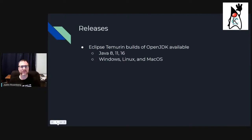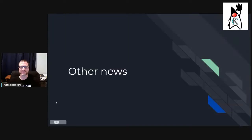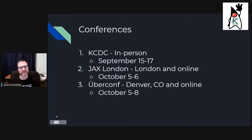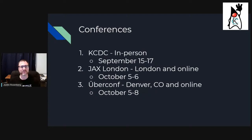For releases, Eclipse had a release with Temurin builds of OpenJDK for Java 8, 11, and 16 on Windows, Linux, and macOS. In other news, KCDC is in person this year, September 15th through 17th. Jax London will be in London but also online. UberConf will be in Denver, Colorado or online, both running October 5th through 8th.